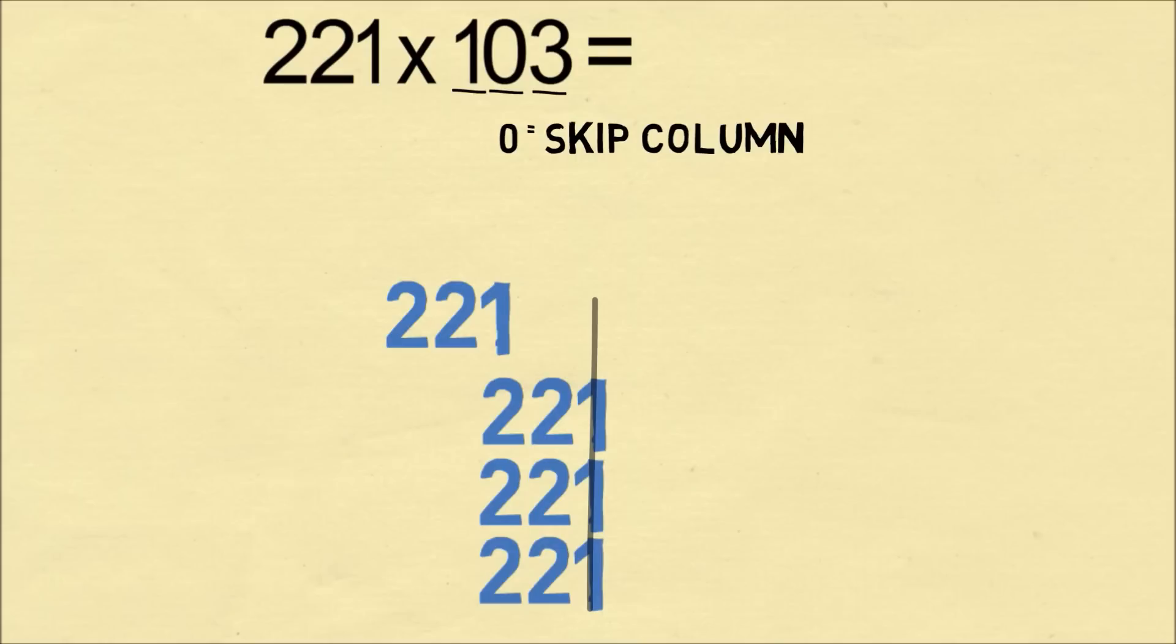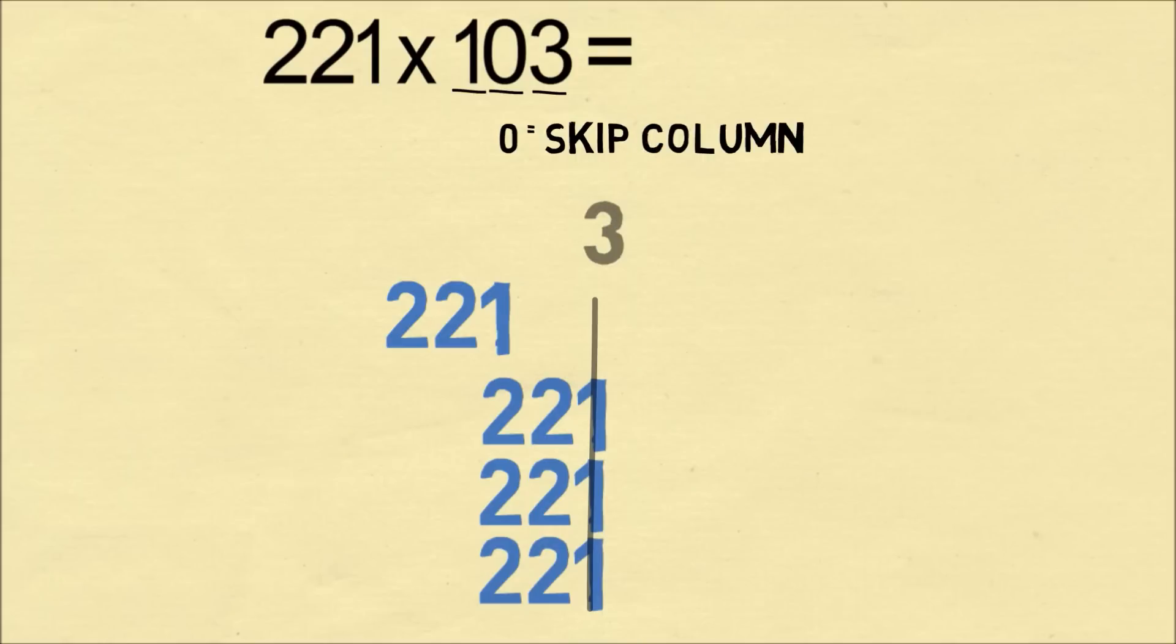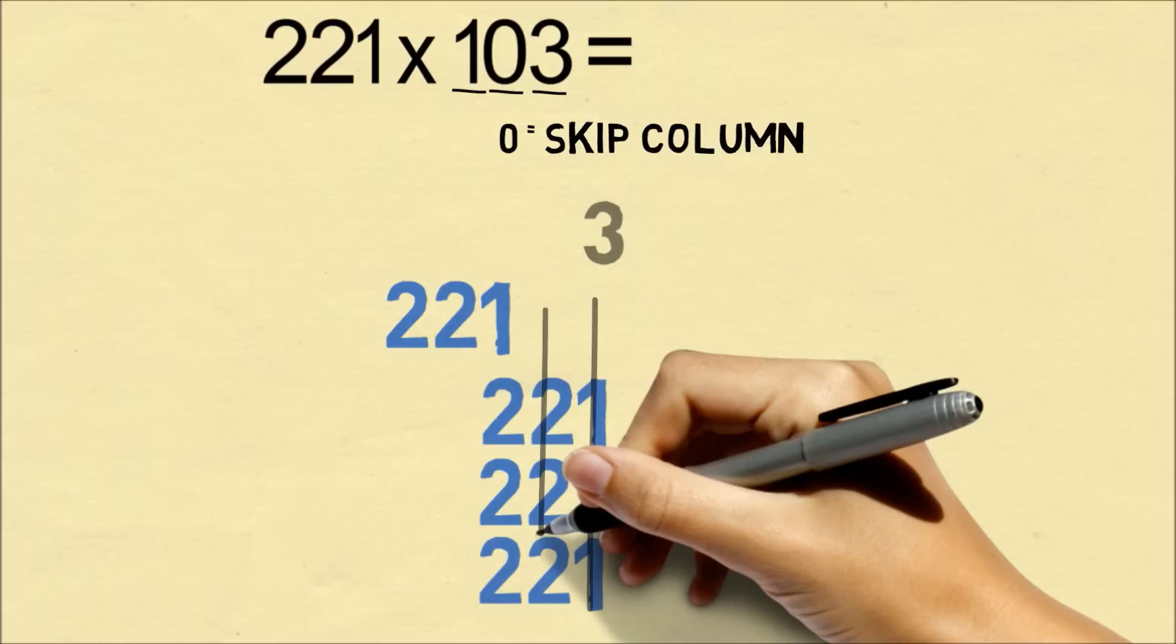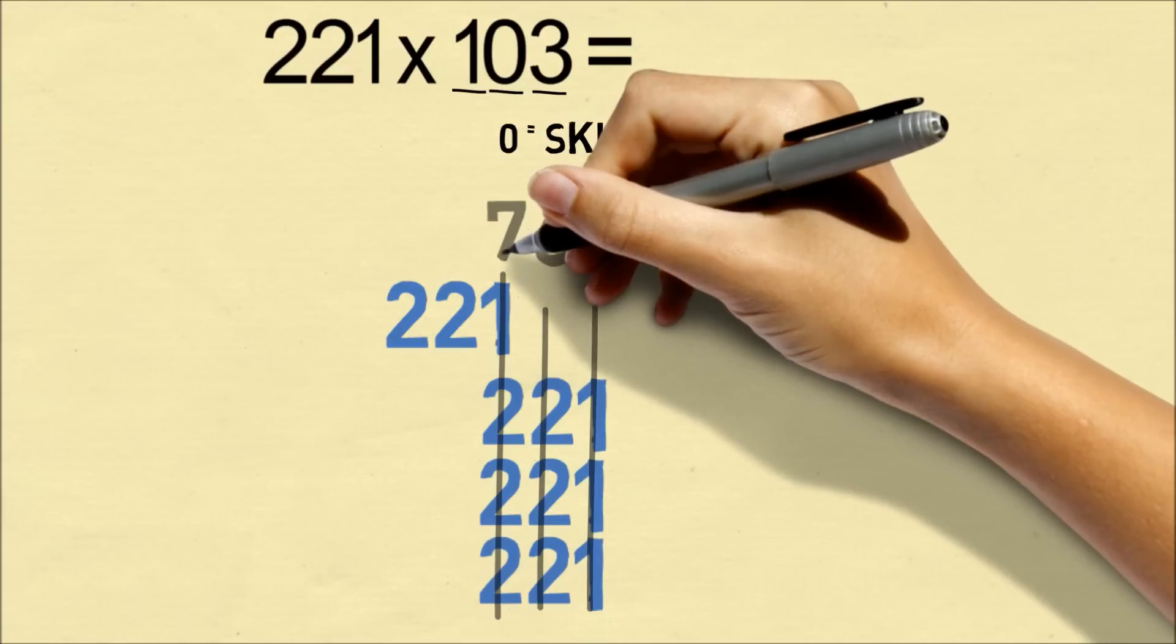And now we go ahead and we add up each column. On the far right, we have 3. In the next column, we have 2 plus 2 plus 2, which is 6. Then we go to the next column, which is 1 plus 2 three times. So that gets a 7.